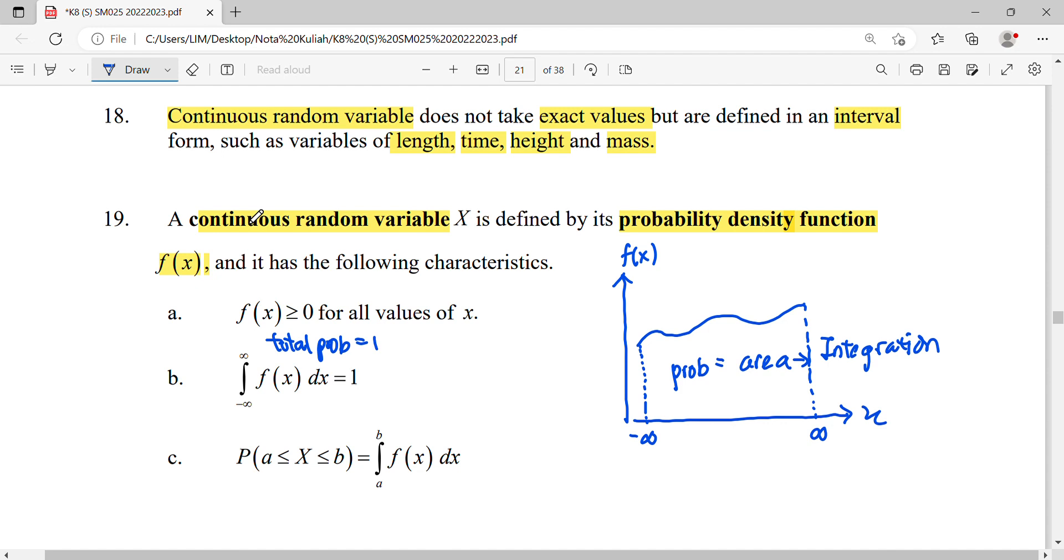When we want to find probability between, let's say, a and b, indirectly you are finding this area. That's why you use integration from a to b—integrating from a to b for the area under the graph.